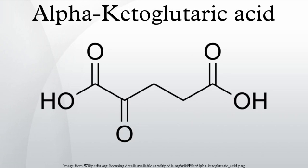In combination with molecular oxygen, alpha-ketoglutarate is one of the requirements for the hydroxylation of proline to hydroxyproline in the production of type 1 collagen. As an antioxidant, alpha-ketoglutarate, which is known to be released by several cell types, decreased the levels of hydrogen peroxide, and was depleted and converted to succinate in cell culture media.